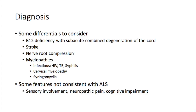When it comes to diagnosis, it's important to consider other potential causes of these symptoms. You have to rule out vitamin B12 deficiency with subacute combined degeneration of the cord, stroke, nerve root compression, myelopathy from infectious causes such as HIV, TB and syphilis, and cervical myelopathy. Features not normally consistent with ALS include sensory involvement, neuropathic pain, or cognitive impairment, although some patients can have mild cognitive impairment at presentation.